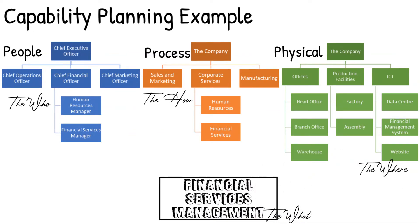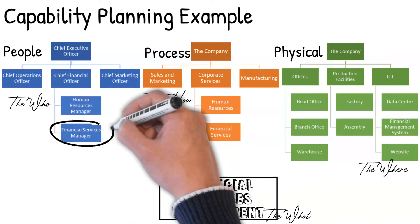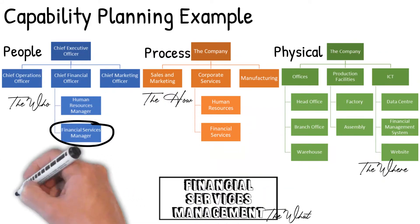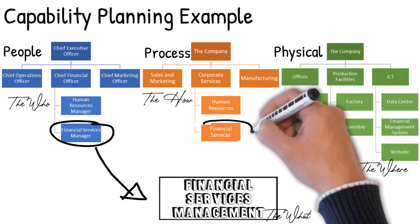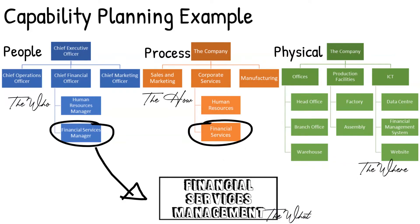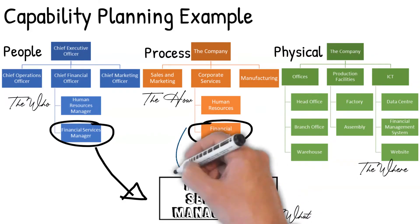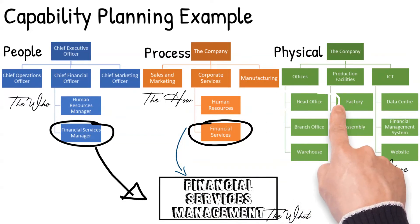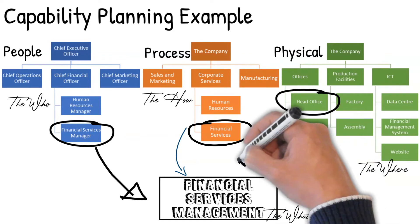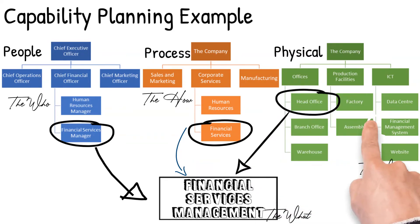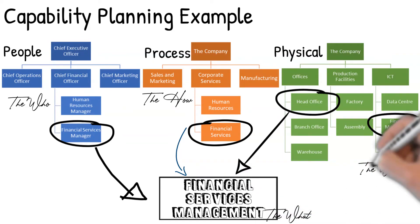So let's take a capability, which is financial services management. This capability is led by the financial services manager. This capability undertakes the financial services processes. It is located at the head office and it utilises the financial management system.